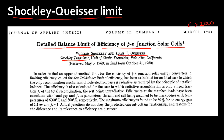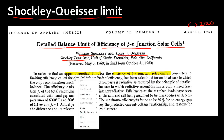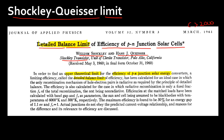Let me read through the abstract to give some context. Shockley and Queisser were interested in finding the upper theoretical limit of efficiency conversion of a PN junction-based solar cell. They applied the principle of detailed balance — a concept from thermodynamics — as a thermodynamic approach to find this limit.